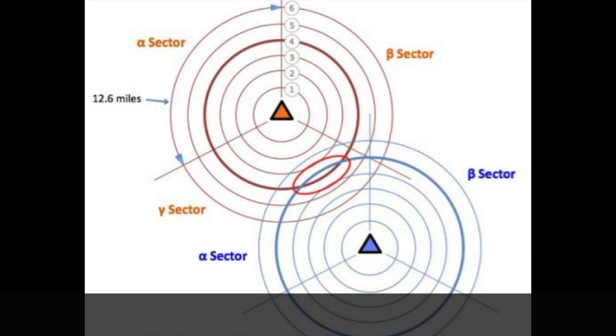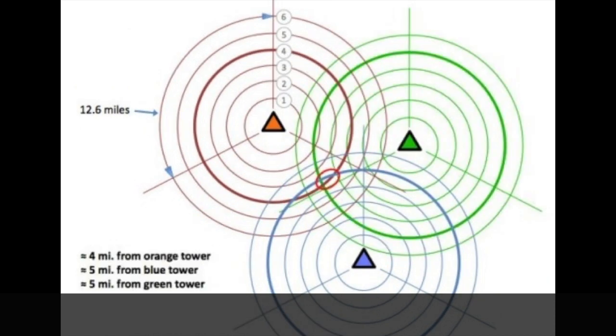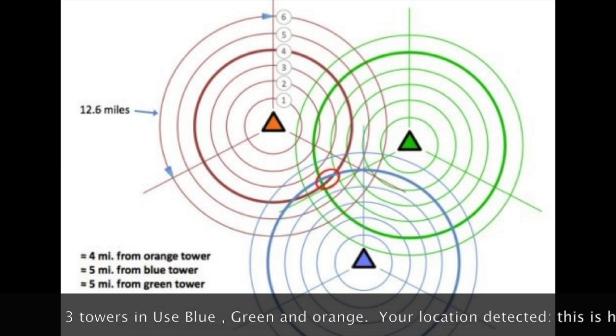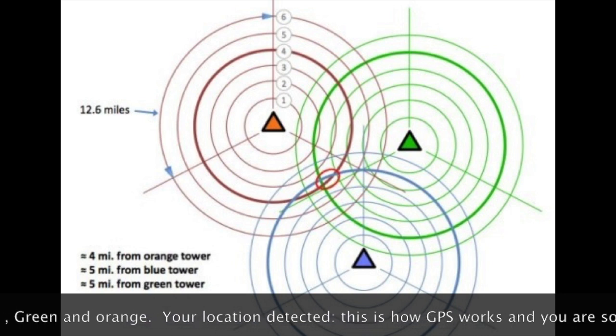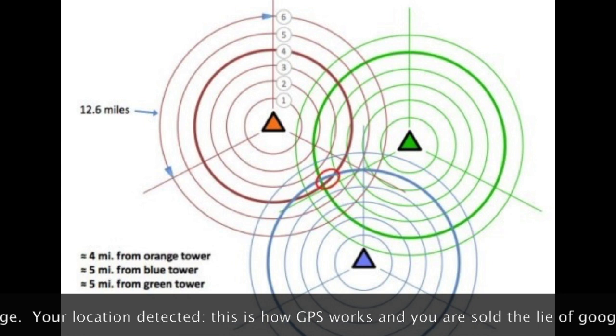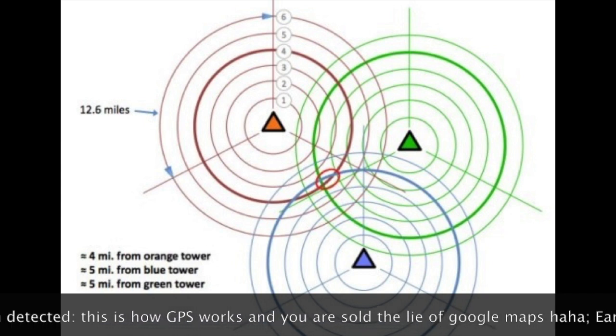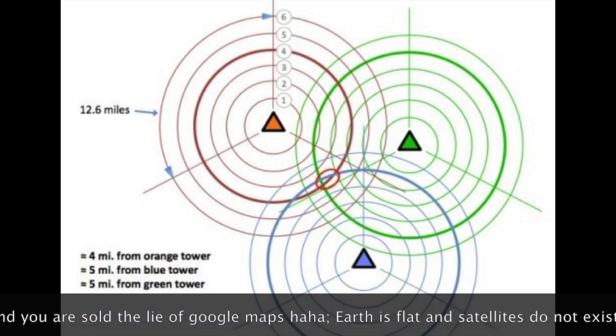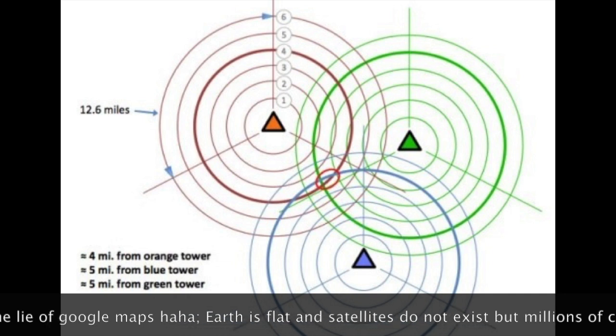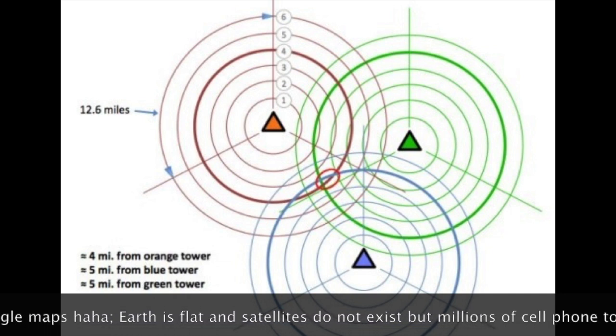Now if the third tower is brought into play, we get what is called triangulation. In this case, we can trace the cell phone really accurately. As you can see, the mobile phone is within the red circle. If it moves to the left, it enters the green tower band six. If it moves to the right, it enters the green tower's band four. If it moves down, it enters the green tower's gamma sector and also enters the band four of the blue tower. This is how triangulation works.